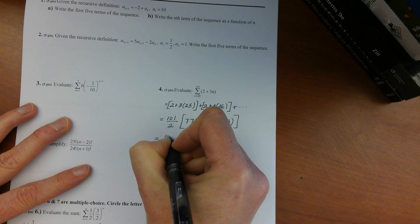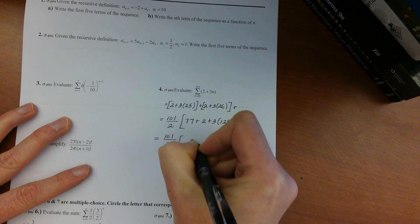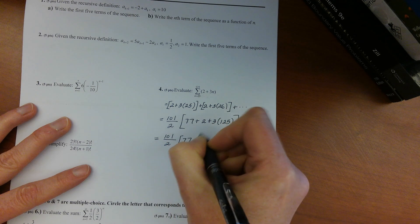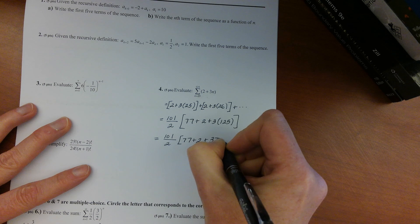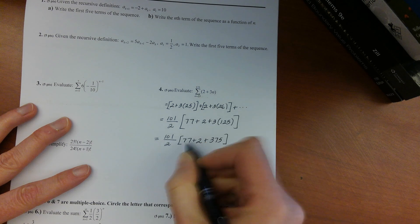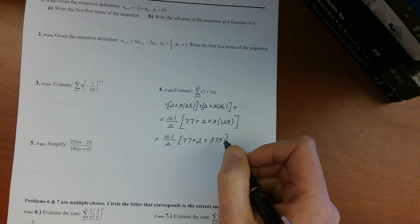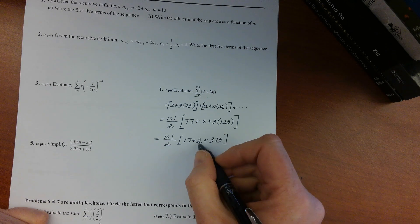So we'd have 101 over 2, and then times 77 plus 2 plus 375. Alright, probably the hardest part in this problem would just be adding that all up.